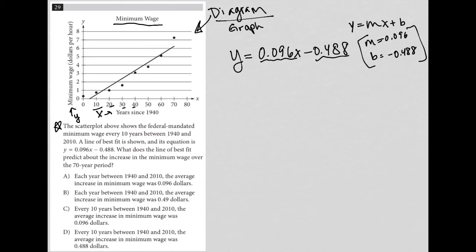Now that does make sense because that would represent the slope here. We're going up in y-value, which is minimum wage per year, that value. So I like answer choice A.